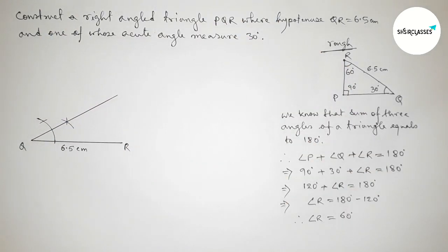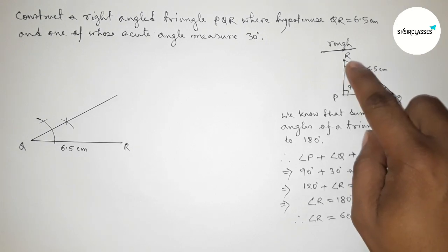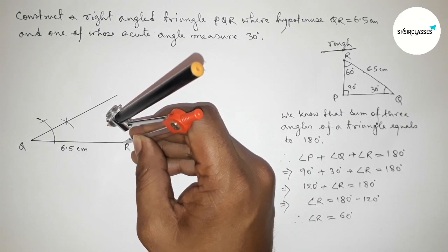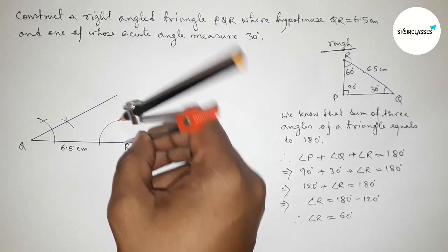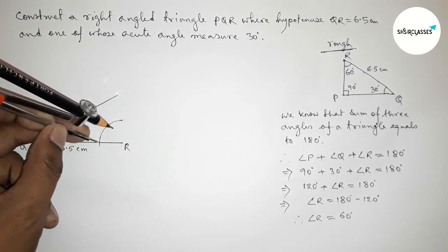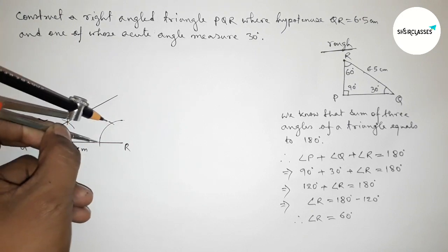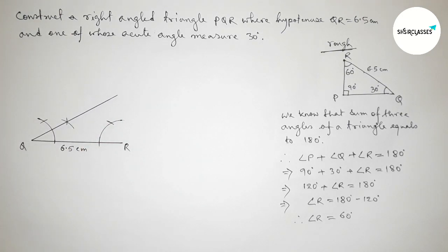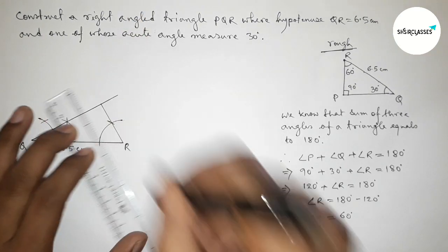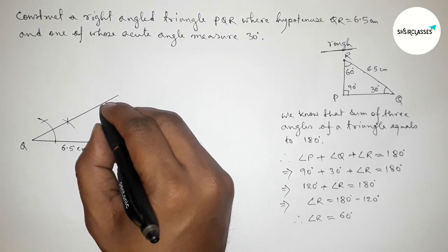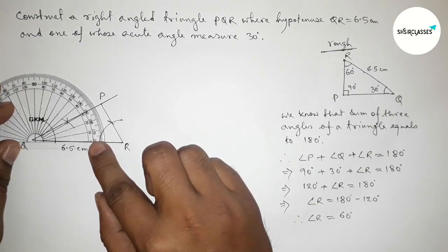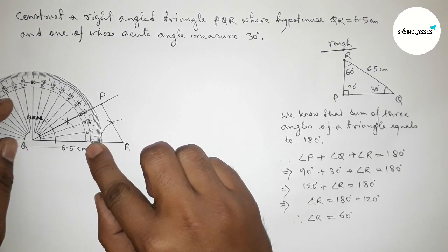Similarly, drawing a 60 degree angle at point R using a compass: placing the compass at R, taking any length and drawing an arc, then using the same length to cut and joining the line to get a 60 degree angle. Both lines meet at a point, which we take as point P.